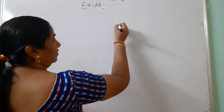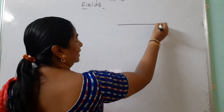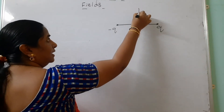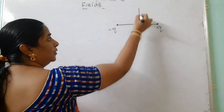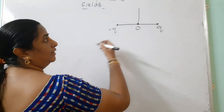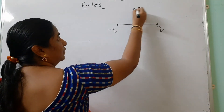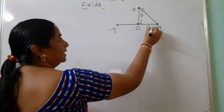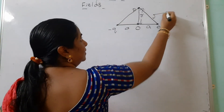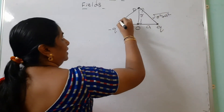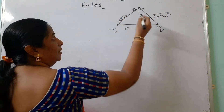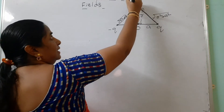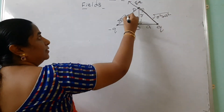The next question is intensity on the equatorial line. The equatorial line is the perpendicular bisector passing through the center of the electric dipole. Consider a point P on this line at distance R from the center. By Pythagoras theorem, the distance from P to each charge is √(R²+A²). The intensity due to the positive charge, E_Q, acts away from the positive charge.